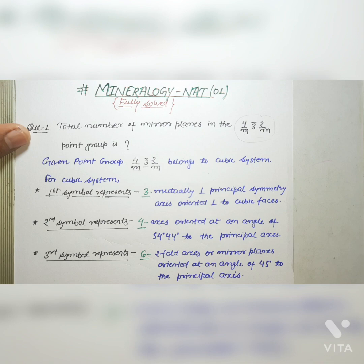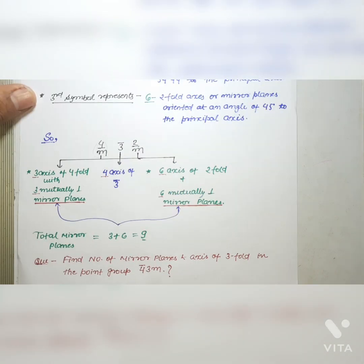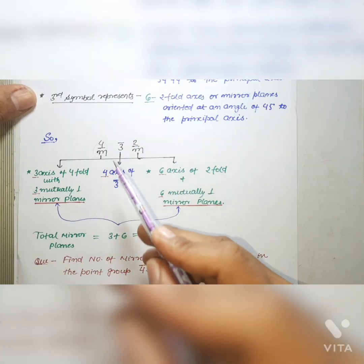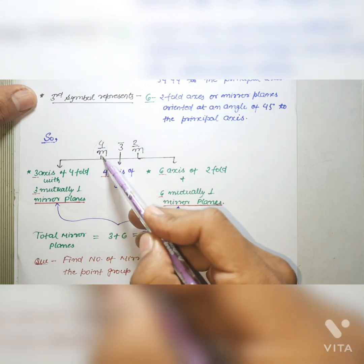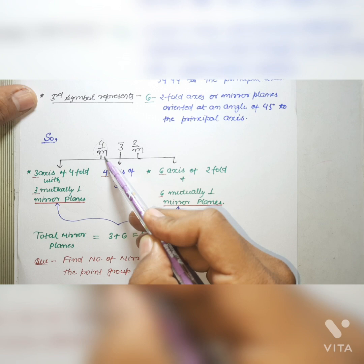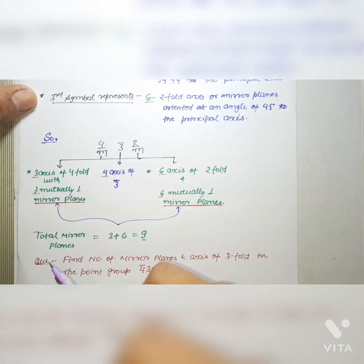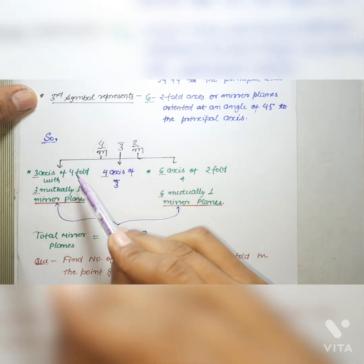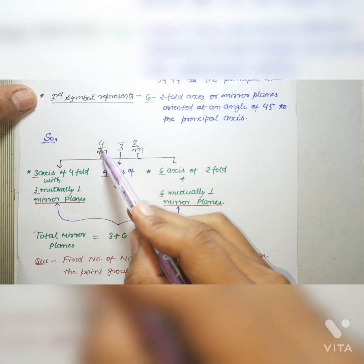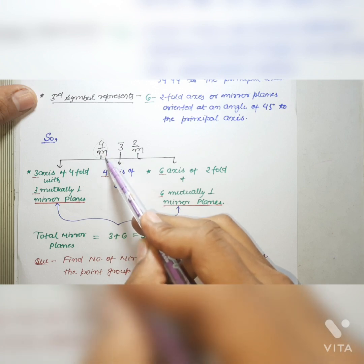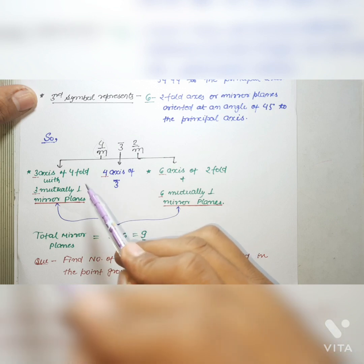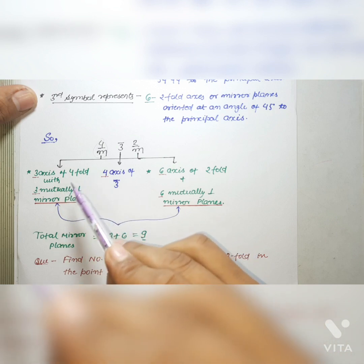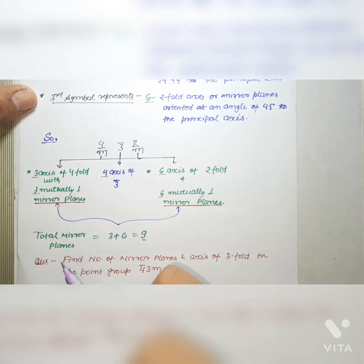Now, considering the given point group 4/m 3̄ 2/m, the first symbol represents three mutually perpendicular principal symmetry axes, so there will be three axes of fourfold. The 'over M' indicates that there are three mutually perpendicular mirror planes. So there are three fourfold axes along with three mutually perpendicular mirror planes.